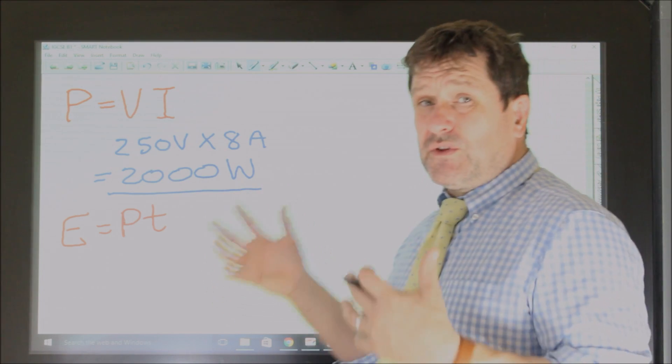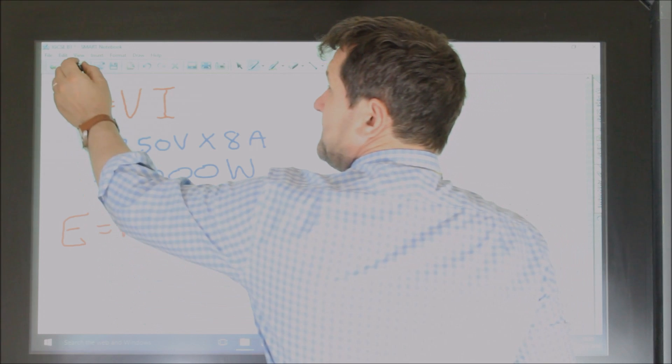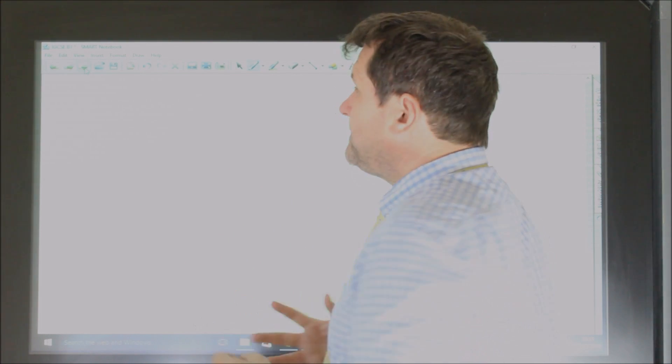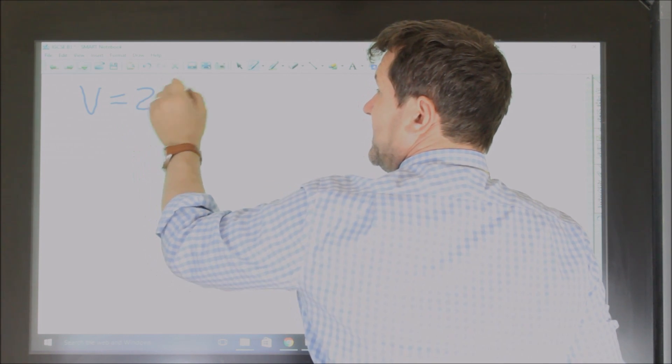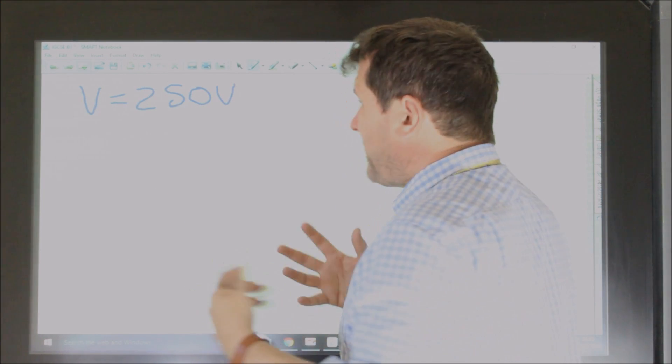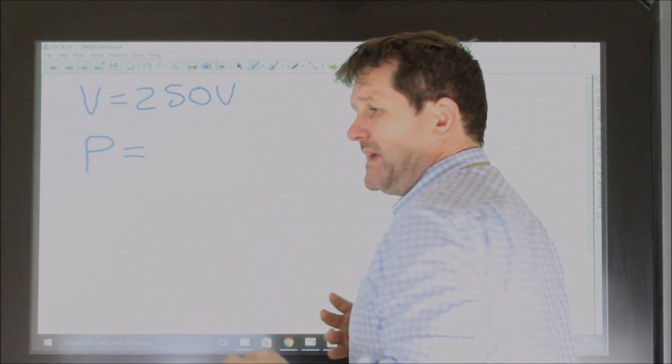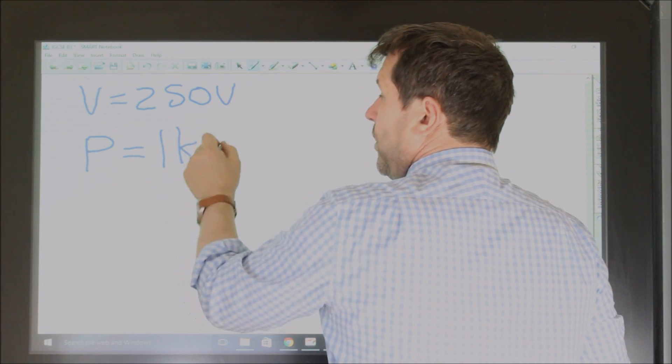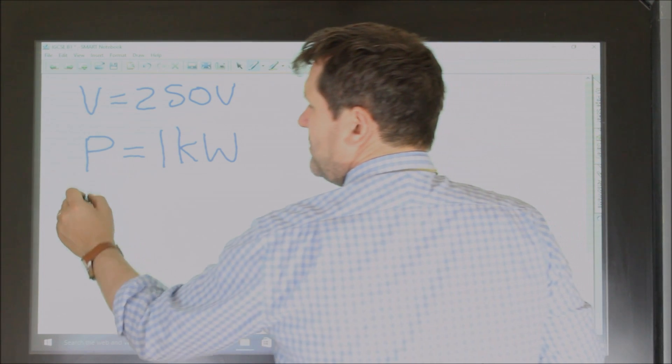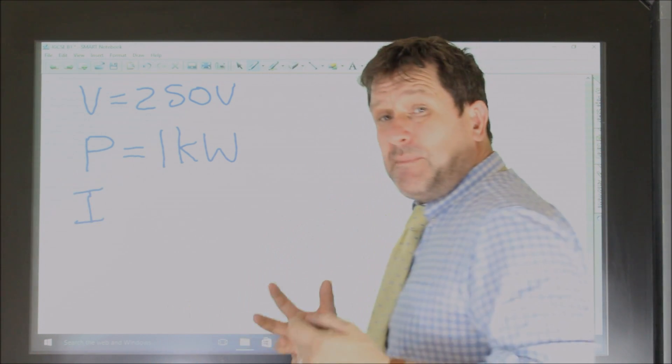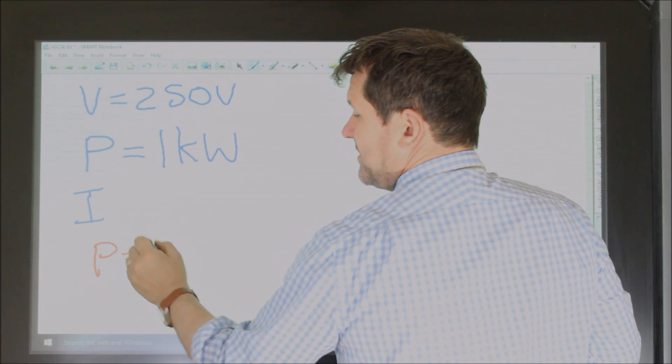Now where this equation often comes in is to calculate a specific value for a fuse. So for example, if you were told that the electricity supply is 250 volts, and if you were told the power of an appliance, so they could say the power of a particular appliance is one kilowatt, they could say to you, what will be the current? So they could say, what will be the current passing through that appliance? And you would say, P equals VI.